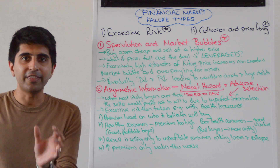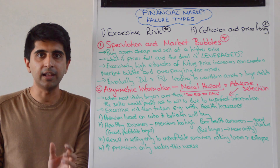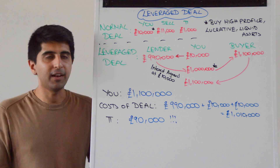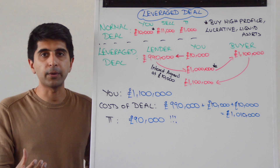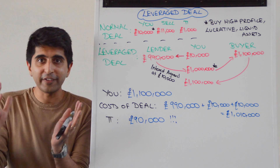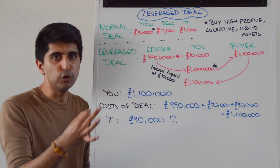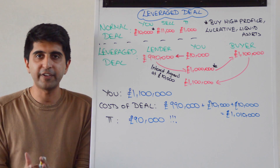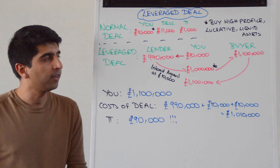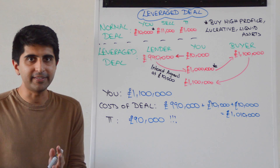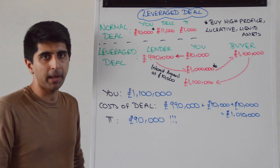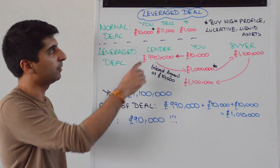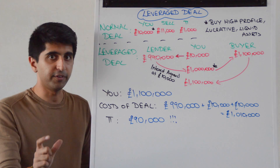Even worse if that deal is a leveraged deal. A normal deal is a very simple idea. You're sitting on £10,000, you decide using your own financial market skill to buy high profile, lucrative and liquid assets that you know other people in financial markets will want to buy from you. You're also a very good salesperson so you can market these assets and sell them for £11,000, giving you a nice tidy profit of £1,000. That's the basic idea of speculation — buy low, sell higher, make the profit in between.